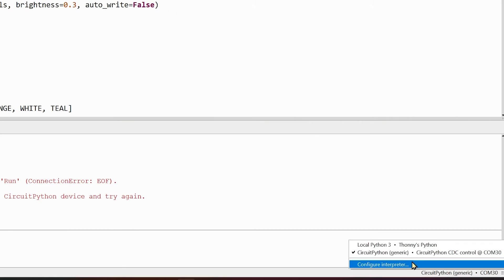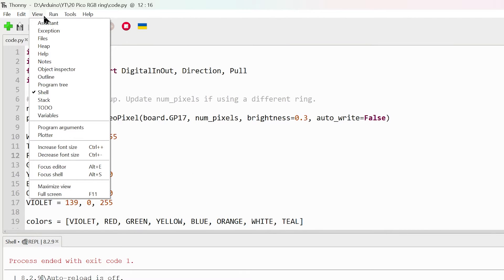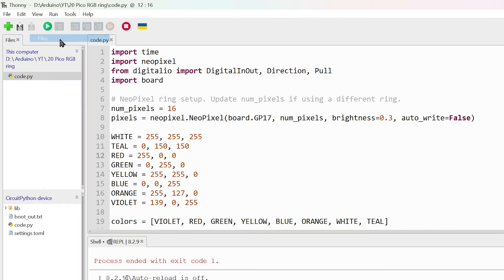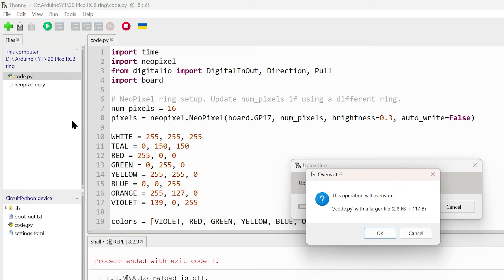Inside Thonny, make sure your board is selected here, then go to View Files. On the top panel, navigate to the folder where you downloaded the project. Right-click the code.py file and select 'Upload to /', click yes to replace if asked.